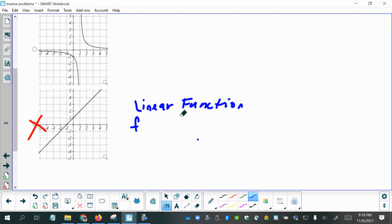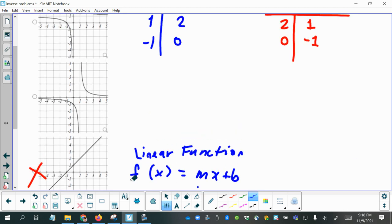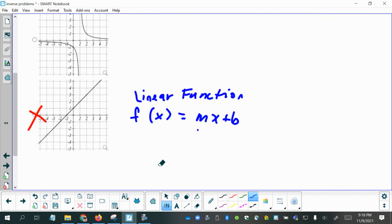would be in the form f of x equals mx plus b. And so if your original function isn't a line, then your inverse function also is not going to be a line. So this option's gone, and we're down to only two choices here.